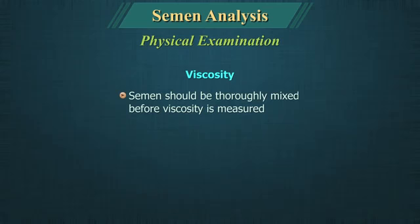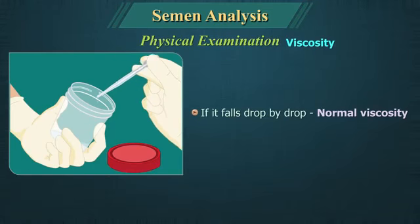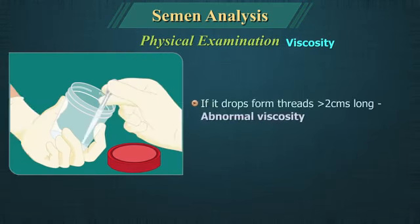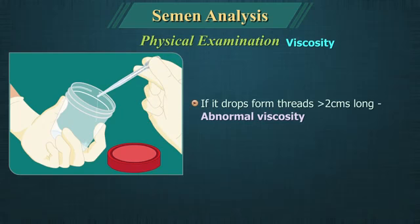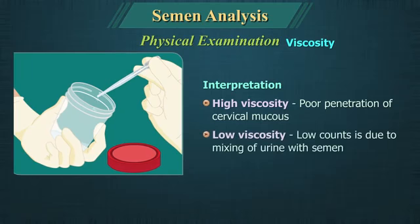Viscosity: The semen should be thoroughly mixed before viscosity is measured. It is assessed by dropping semen from a plastic disposable pipette. If it falls drop by drop, the viscosity is normal. Abnormal viscosity is when drops form threads more than 2 cm long. High viscosity may be associated with poor penetration of cervical mucus; low viscosity may be associated with low counts.